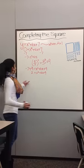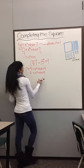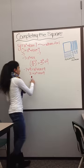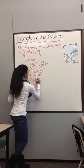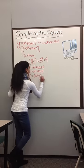2 equals x squared plus 6x plus 9. And that is, when you factor this out, you get 2 equals x plus 3 squared.